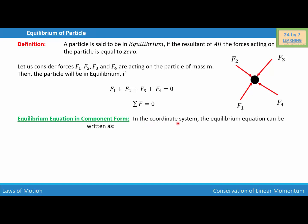Let's consider a coordinate system. The equilibrium equation can be written as sigma Fx equals zero, which simply means that F1x plus F2x plus F3x plus F4x equals zero.